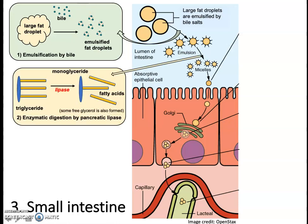So we have emulsification breaking large fat droplets into smaller droplets, and then enzymatic digestion occurring within those droplets. These are lipase enzymes secreted from the pancreas into the small intestine. This enzymatic digestion of triglycerides breaks the triglyceride structure by cleaving fatty acids off of it, usually leaving a monoglyceride and a couple of free fatty acids, and sometimes forming some free glycerol as well.